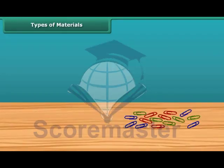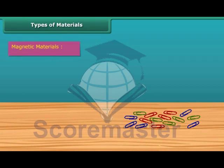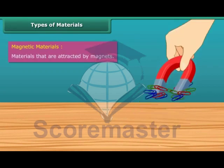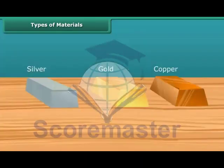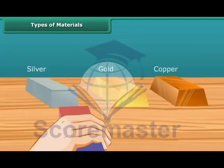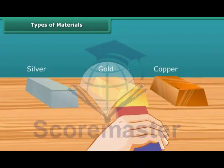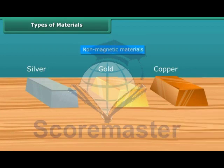Types of materials: let us look at the types of materials. Materials that are attracted by magnets are called magnetic materials. For example, screws, nuts, and bolts are magnetic materials.